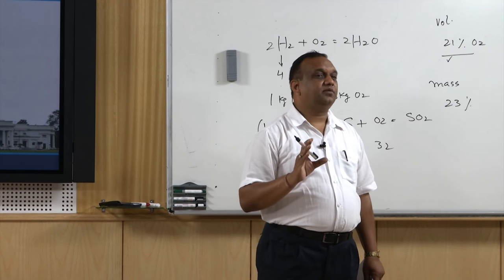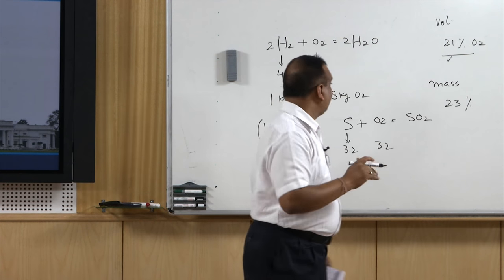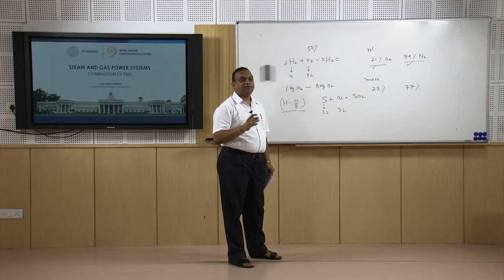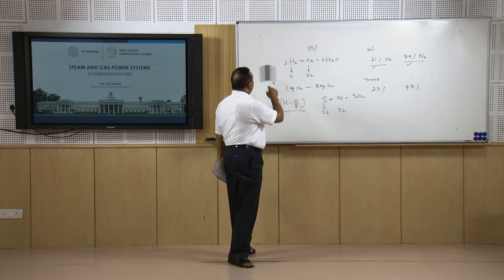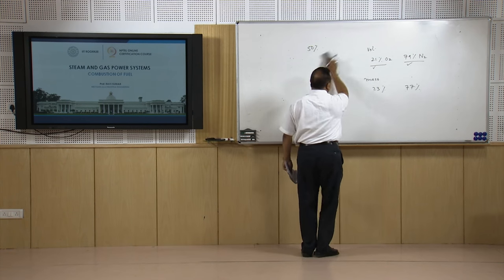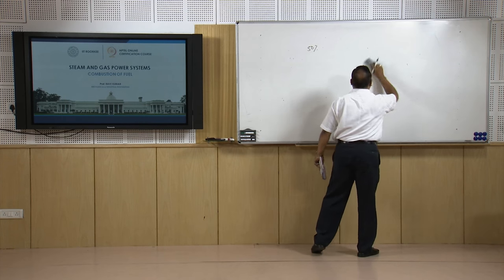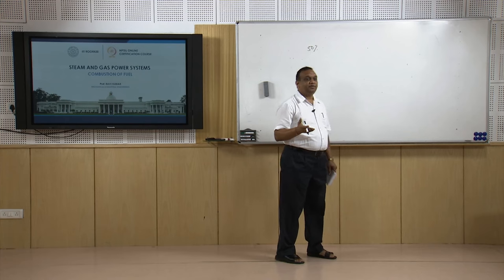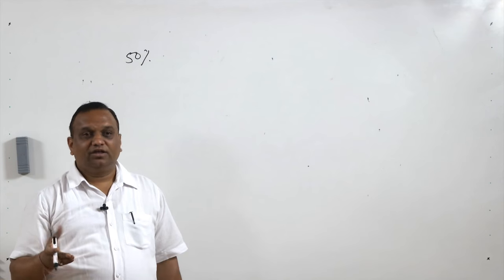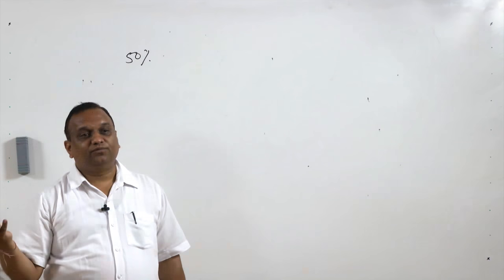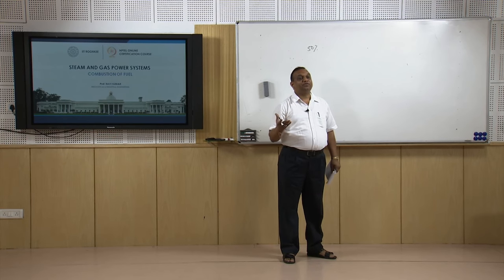Excess air is supplied in the boiler because air is blown over the fuel in a heterogeneous mixture — not a homogeneous one. Excess air can go up to 50 percent. Nitrogen does not participate in combustion, so if you can measure nitrogen in the outgoing flue gases, you can calculate how much air has been used for combustion.